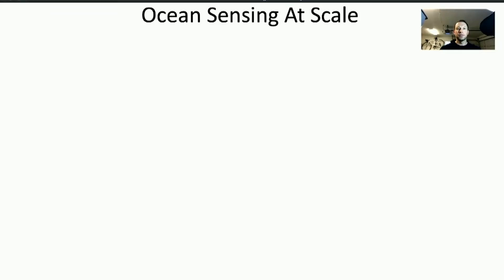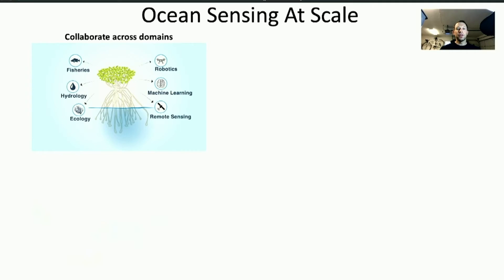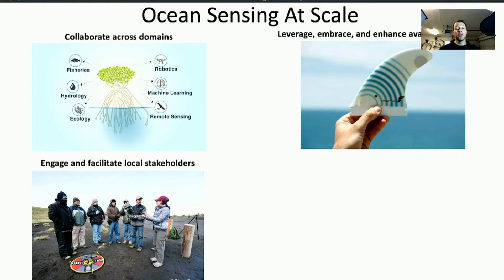Why were these projects successful? One of the most important elements is the strong and broad collaboration across domains. Oceanographers must work closely with engineers and data scientists. Equally important is engaging the local stakeholders — we need buy-in from those who ultimately deploy the sensors and collect the data. If we want to sense at scale, we must be able to build the sensors at scale. Custom one-off prototypes do not provide a sustainable route for widespread usage. We should leverage existing commercial off-the-shelf technologies as much as possible.